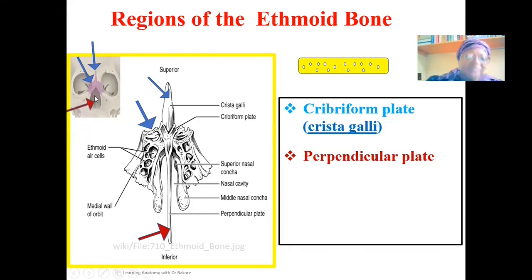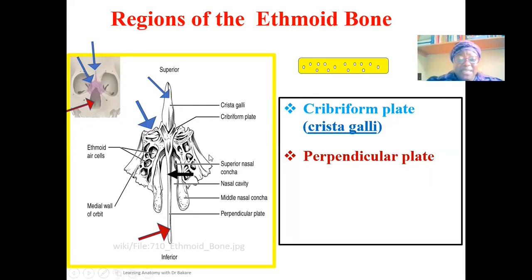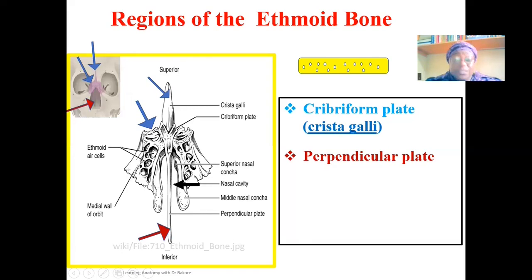In this image, you can see the perpendicular plate of the ethmoid extending from the cribriform plate and coming down to divide the nasal cavity into the right side and the left side. The nasal cavity is located at the central part, and as the perpendicular plate of the ethmoid emerges from the cribriform plate and drives down along the nasal cavity, it divides it into right and left sides.